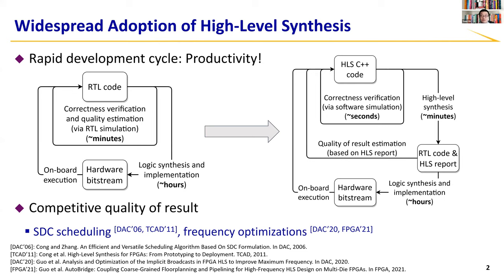Without HLS, programmers have to spend tens of minutes just to verify the correctness of even a tiny component in their code. With HLS, programmers can verify functional correctness using software simulation in as few as just a couple of seconds. The quality of result estimation is also faster, and this time saving is important because it usually takes many iterations to develop an accelerator. Thanks to the latest advances in scheduling algorithms and timing optimizations, the quality of results produced by HLS has become competitive with RTL designs in terms of cycle count and, more recently, clock frequency as well.